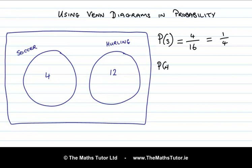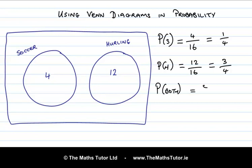What's the probability of getting a hurling player? There are 12 hurling players out of a total of 16, so there's a 3 quarters chance of picking a hurling player. What's the probability of picking someone who plays both sports? We can see from the diagram that there's no one who plays both, so that's 0 out of 16, which is 0.